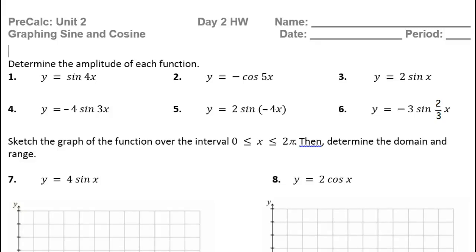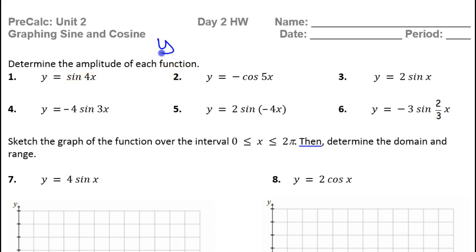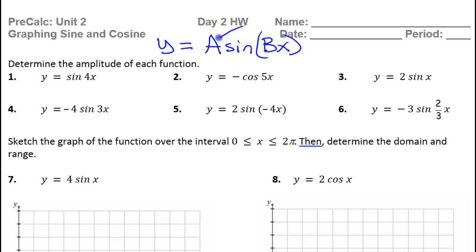In this video, we're going to talk about the basic properties of sine and cosine. In this first group of problems, we're supposed to determine the amplitude of each function. If I have y equals a sine bx, the a is going to determine the amplitude. You can ignore the b — that comes into play later when we talk about the period. The b value will change the period.